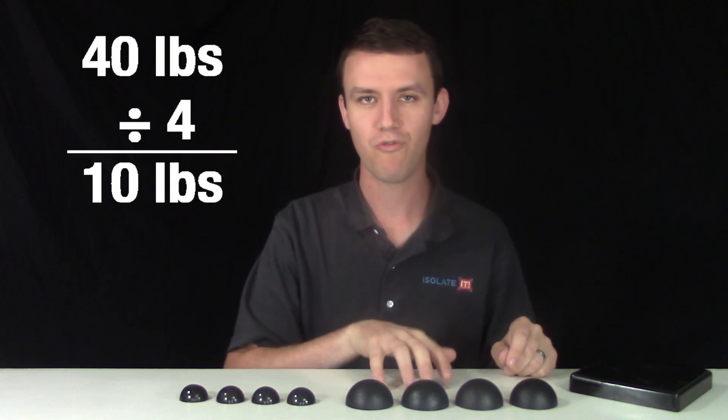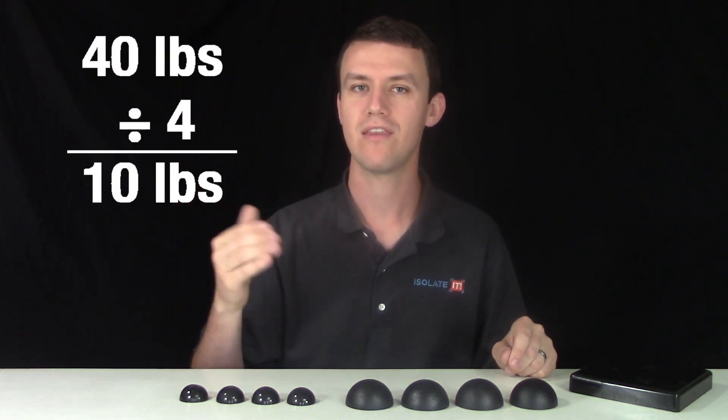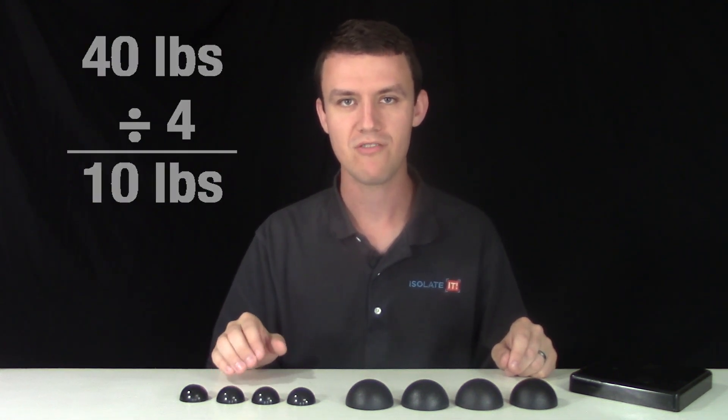In an example of a 40-pound object supported with four isolators, we would divide 40 by 4 to find that our total weight loading is 10 pounds. We can now select a proper isolator for the project.